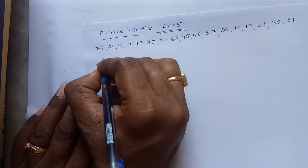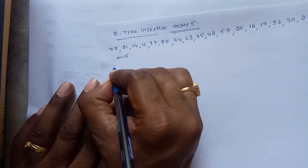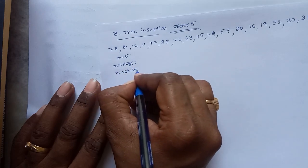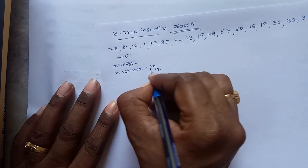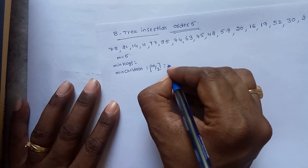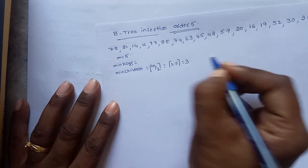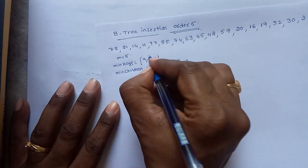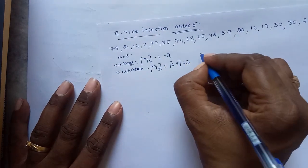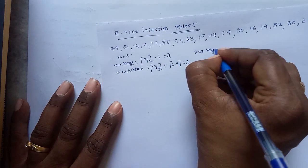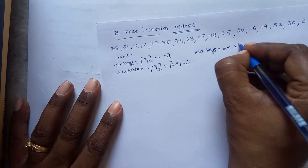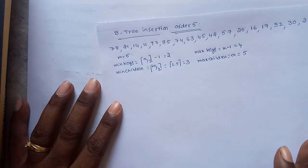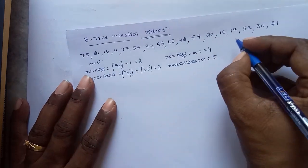For order 5, the minimum children is m/2 ceiling, that is ceiling of 5/2 = 3. So the minimum children are 3, and the minimum keys are m/2 minus 1, that means 2. The maximum keys are m minus 1, that means 4. The maximum children are m, that means 5.